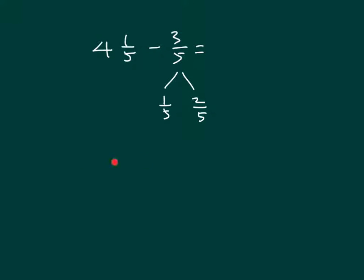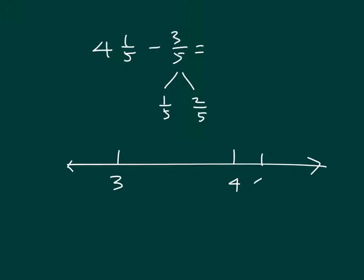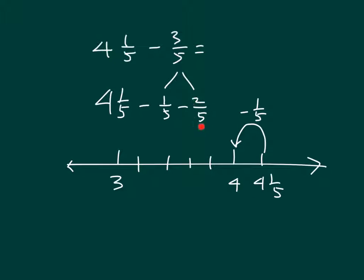So let's subtract using a number line, starting at 4 and 1/5th. We'll subtract 1/5th first — bringing us to the whole number 4 — and then subtract the remaining 2/5ths. That way we have subtracted 1/5th and another 2/5ths, which totals 3/5ths. Counting down from 4: 3 and 4/5ths, 3 and 3/5ths. So 4 and 1/5th minus 3/5ths equals 3 and 3/5ths.